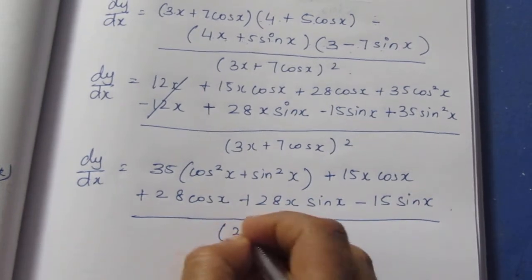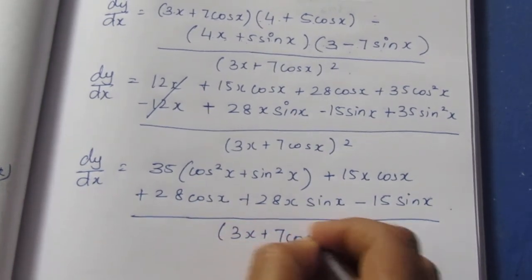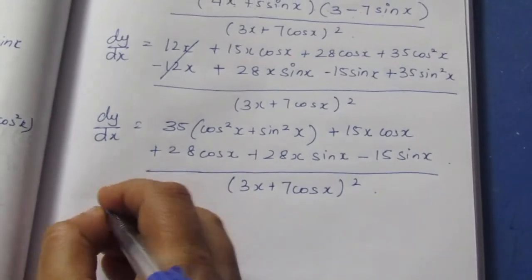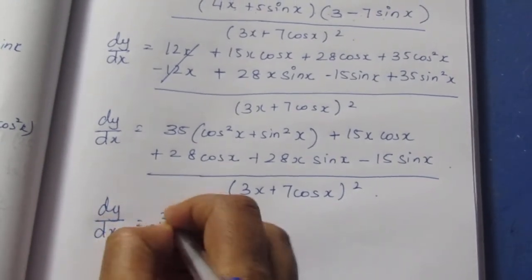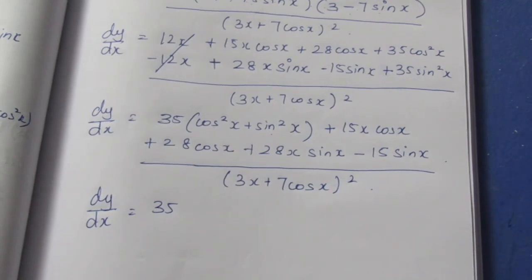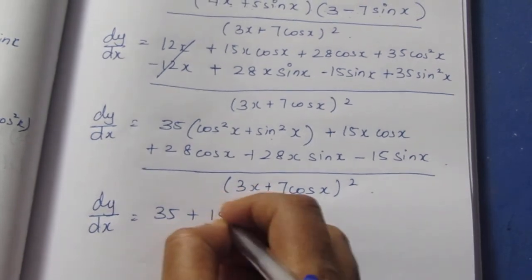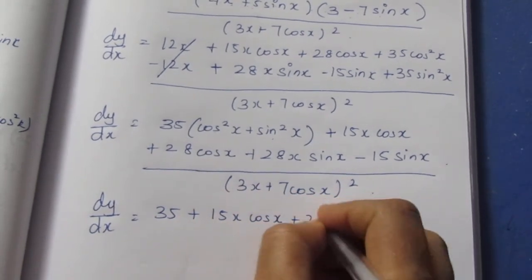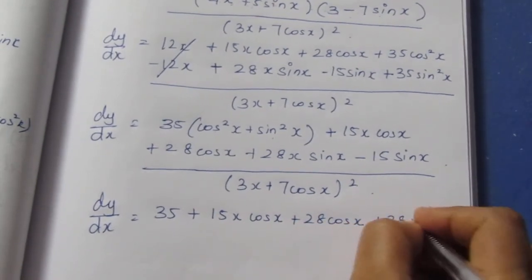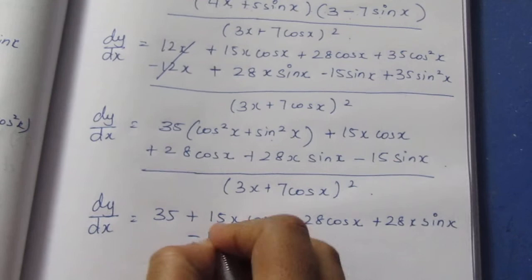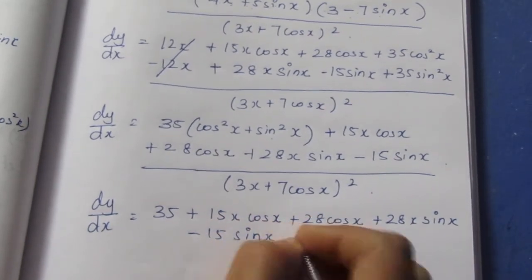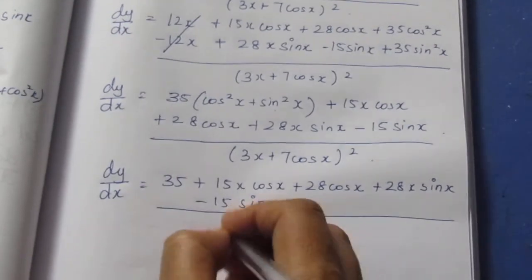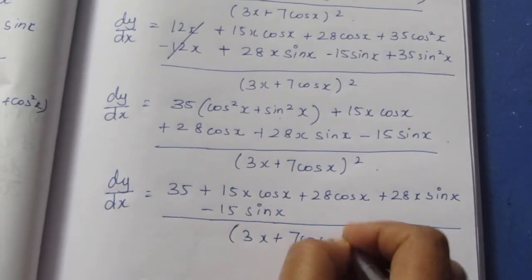All of this is divided by the denominator square. Now, since sin²x + cos²x = 1, we apply that formula: 35 into 1 equals 35. So the numerator becomes 35 plus 28cosx plus 28x·sinx minus 15sinx, all over (3x + 7cosx)².